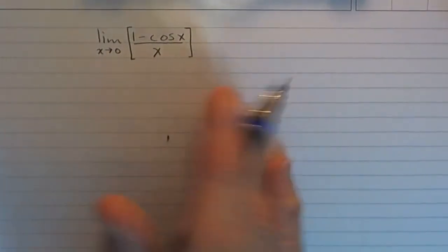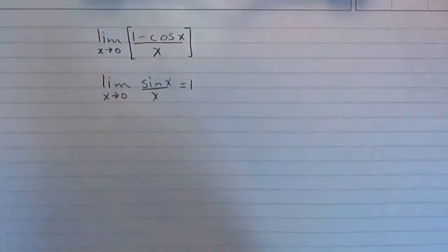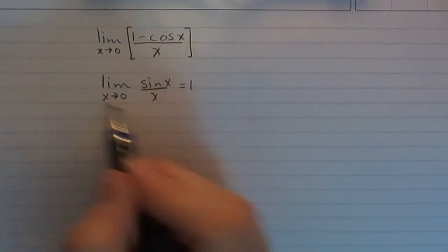Okay, let's see if we can figure out what this limit is. Now, we know this is true. We know that the limit as x goes to 0 of sine x over x, we know that that's equal to 1. That's one of our celebrity limits.